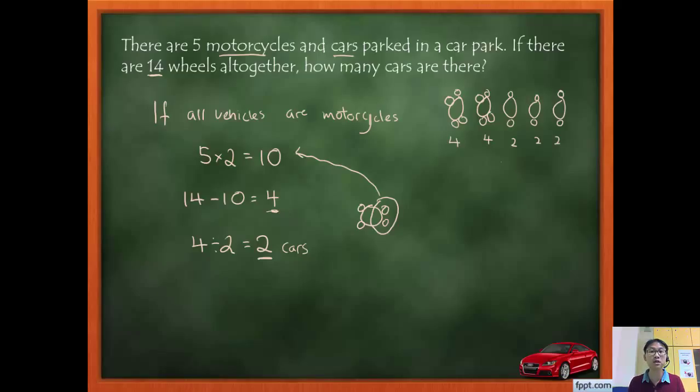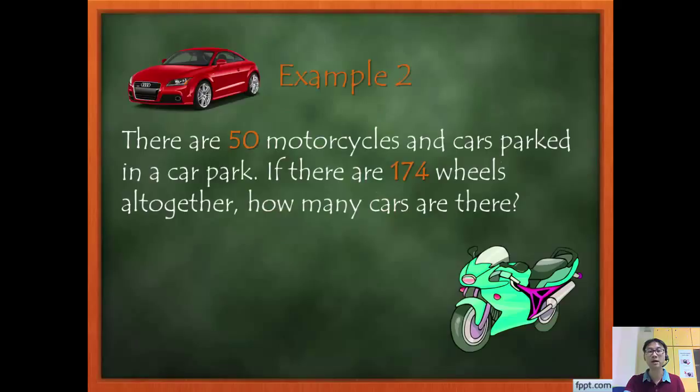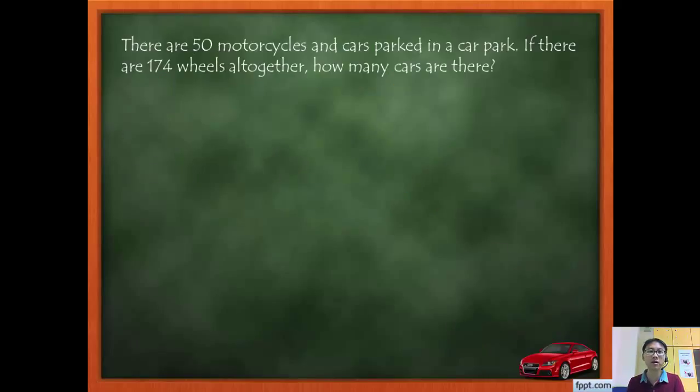Okay, so now let's make the numbers bigger, so it looks a bit more complex, but same thing. Fifteen motorcycles and cars parked, 174 wheels altogether. So let's make a supposition.